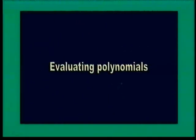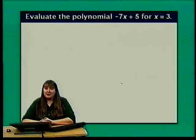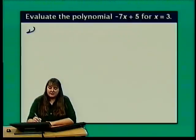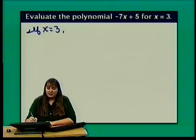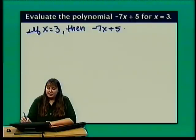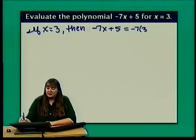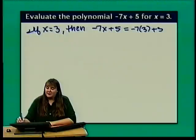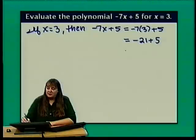Now let's evaluate some polynomials. Let's evaluate negative 7x plus 5 for x equal to 3. We substitute 3 for x: negative 7 times 3 plus 5. Negative 7 times 3 is negative 21, and when we add 5, we get negative 16.